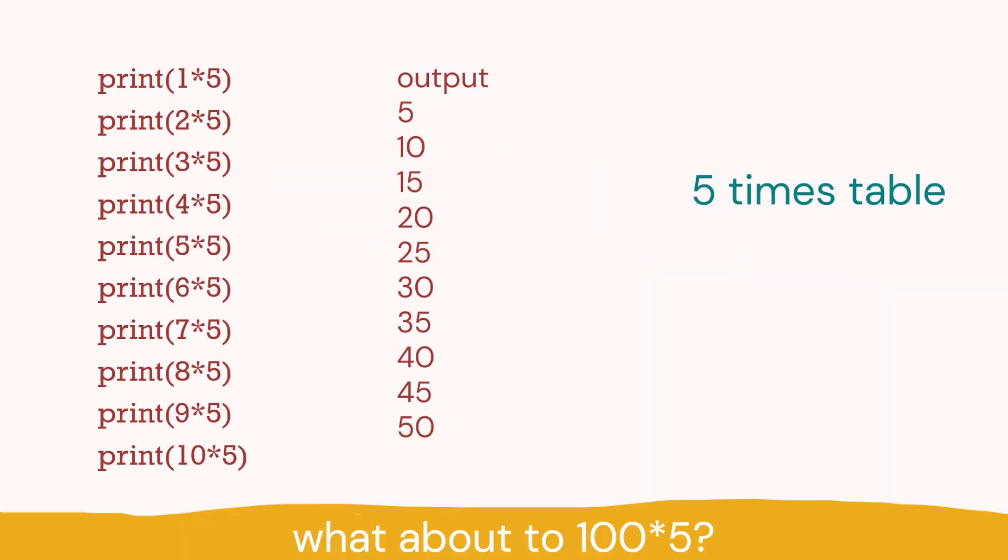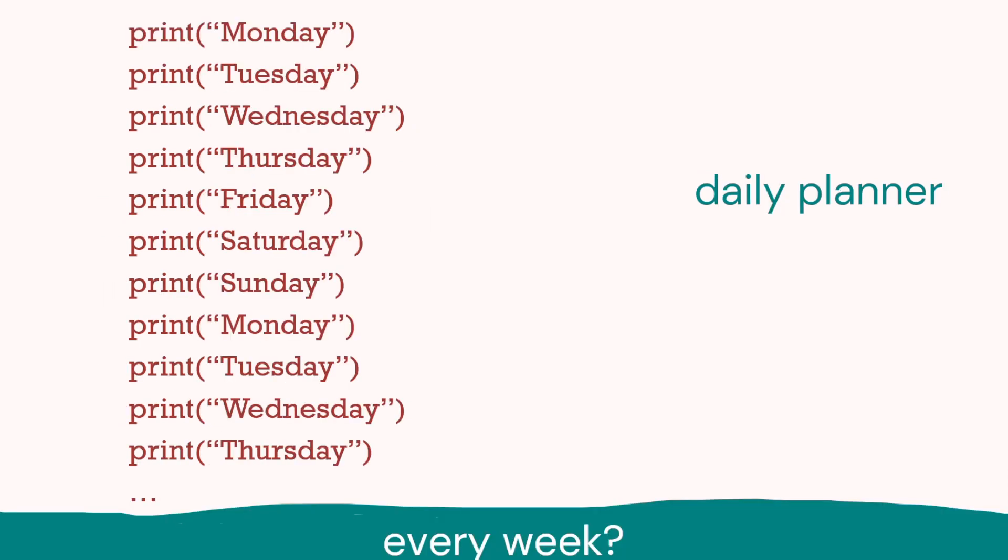So repetition: here we've got the five times table, so 1 times 5, 2 times 5, up to 10 times 5. You can see we can create print statements and the output goes from 5 to 50. What happens if we wanted to do that up to 100 times 5? That's a lot of code. Here we're printing each day of the week. When we get to the end of the week we continue with the next week. So again, a lot of print statements.